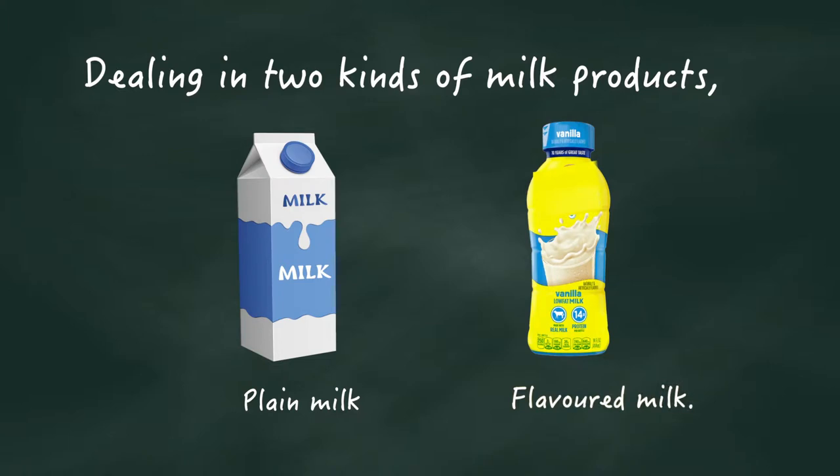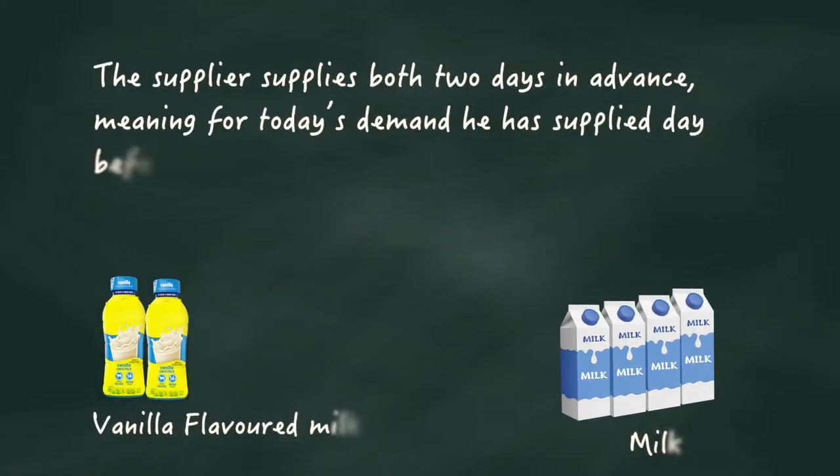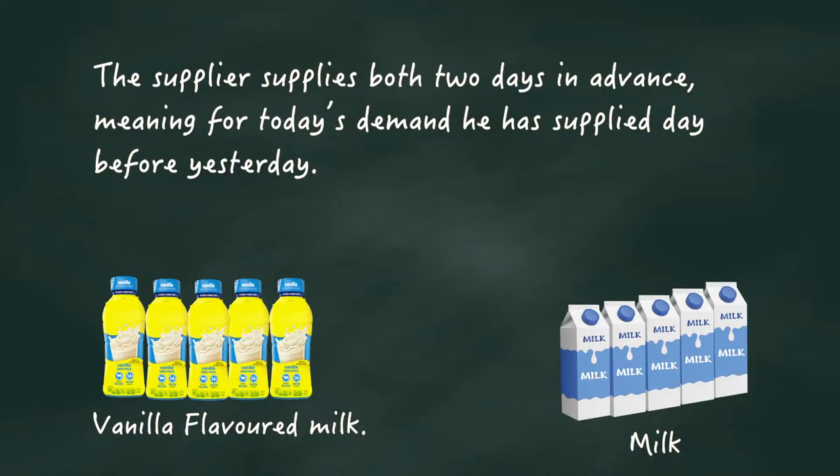For convenience, let us assume we are dealing in one flavor, say vanilla. Assume every day we have a constant demand of 50 packets for each product. Now assume the supplier supplies both two days in advance, meaning for today's demand he has supplied day before yesterday.